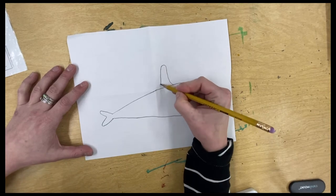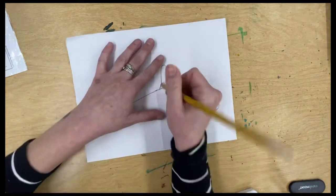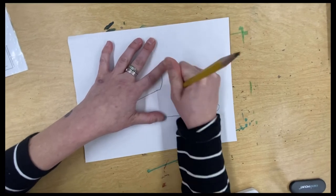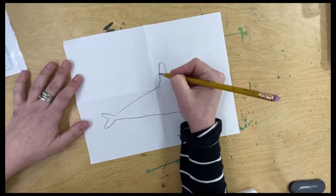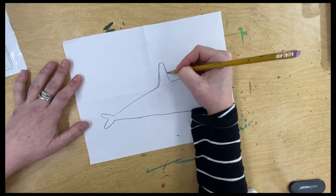Fun fact, when orcas are in captivity, their fins hunch over because they're sad. They're very social animals. They love their families.